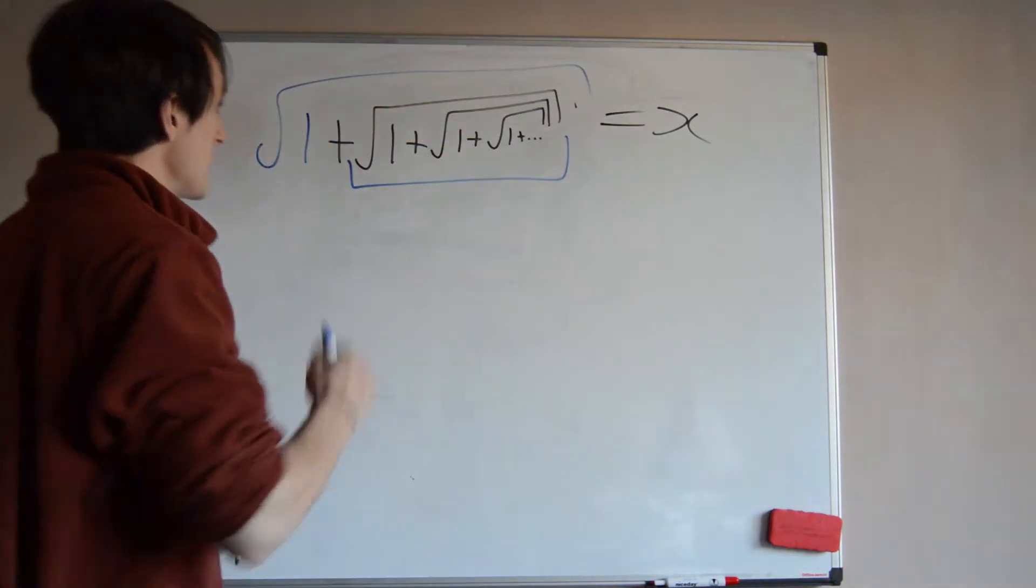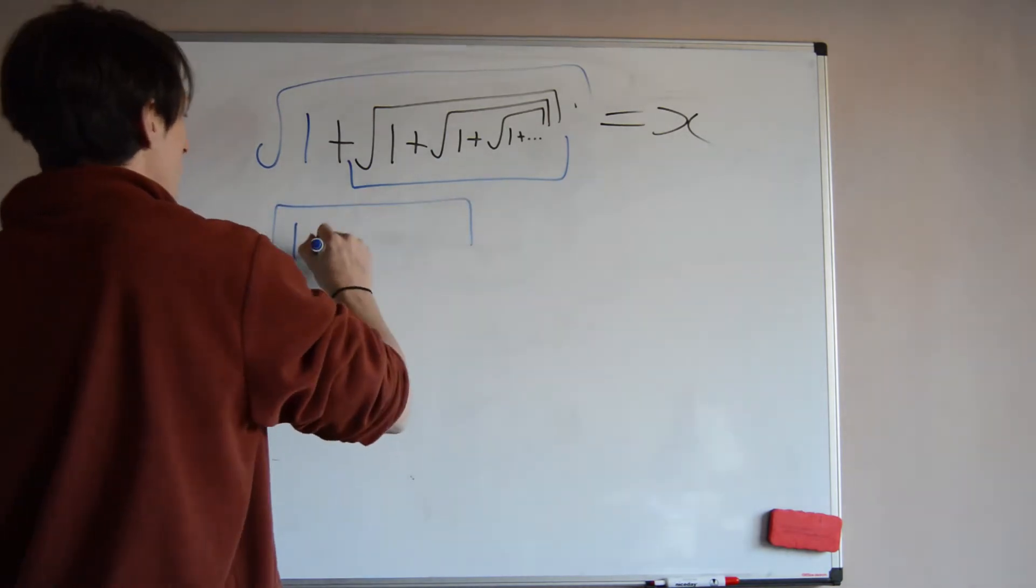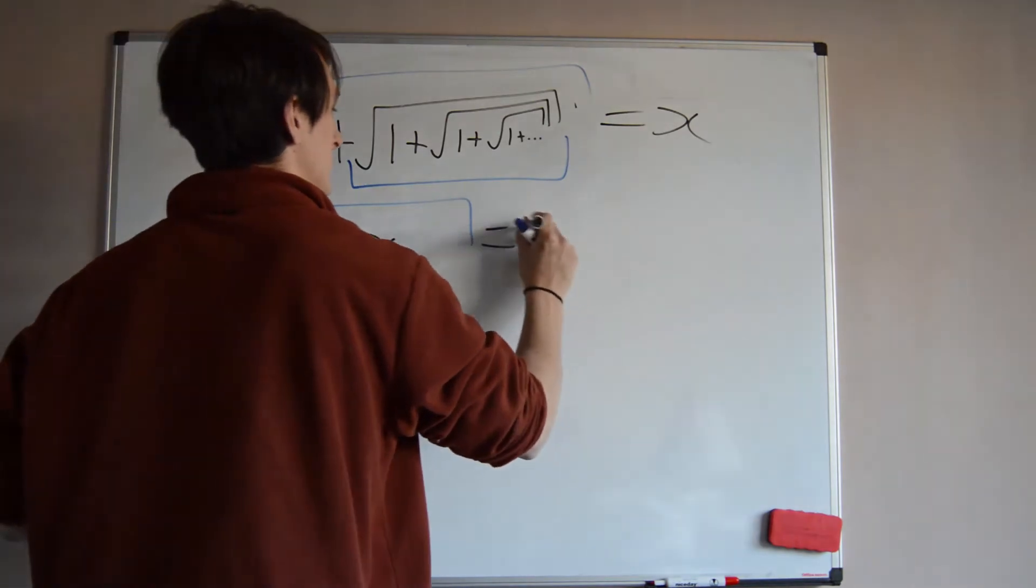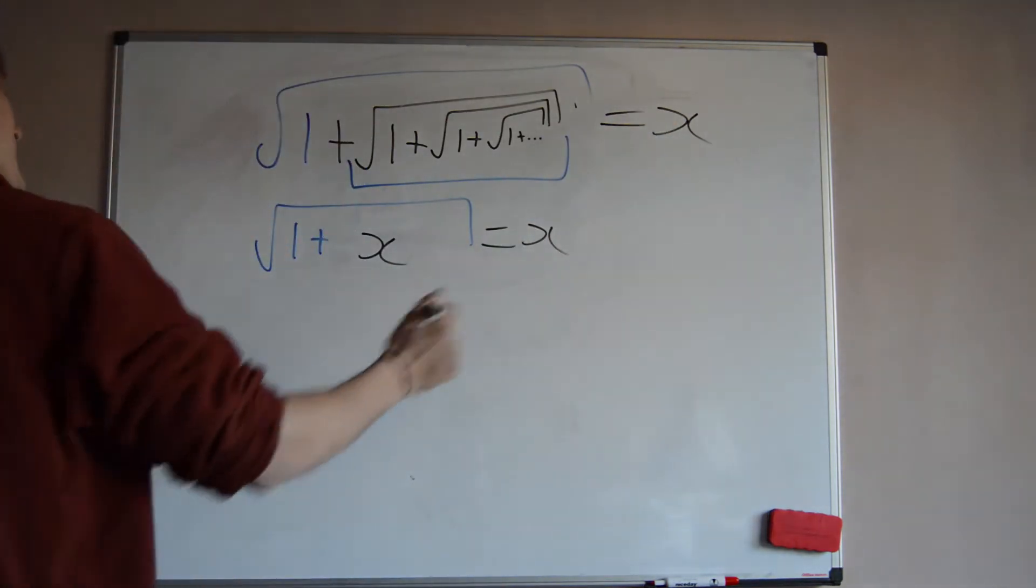The entire thing is x, so what can we write? Let's turn that into algebra. We have the square root of 1 plus this is the same as x. So I can write this as x, and this is still equal to x itself. This is a nice equation.